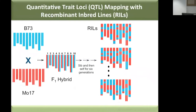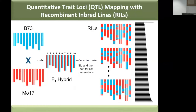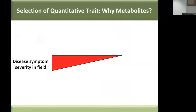We're answering these questions by taking a quantitative genetics approach. There are genetic populations produced by crossing B73 and Mo17 — the susceptible and resistant genotypes — to produce what we call recombinant inbred line populations with shuffled genomes between the two parents. What we can do is measure some kind of quantitative phenotype and statistically associate that phenotype with a particular locus or loci within the genome.